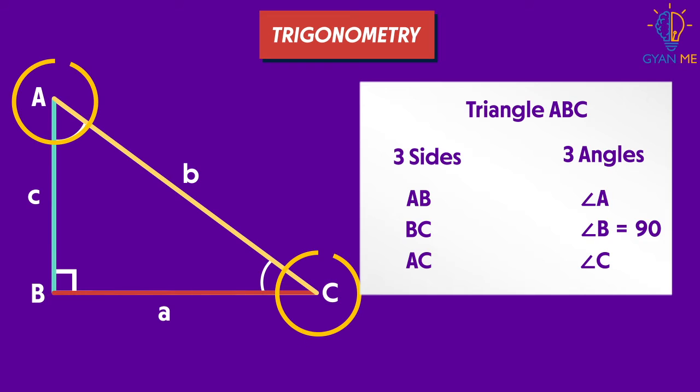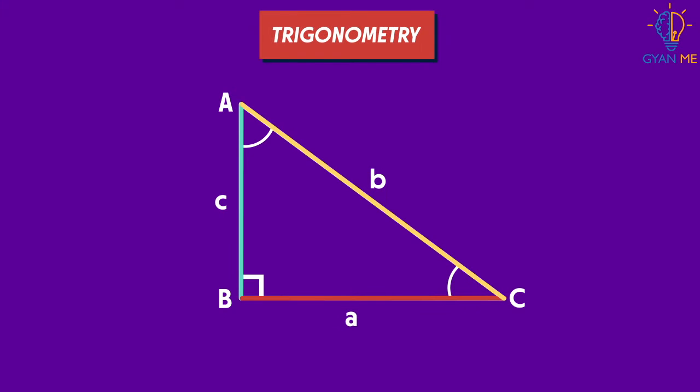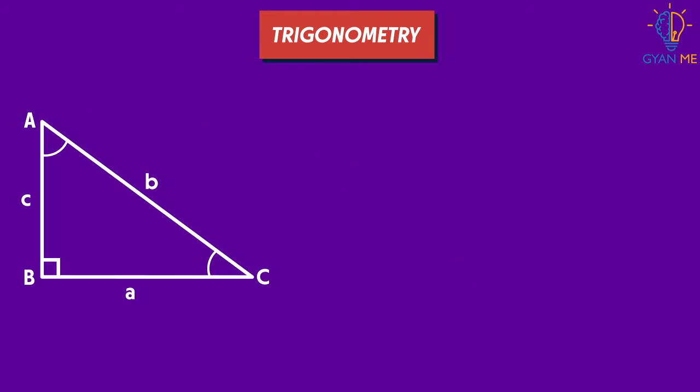So we have two angles and three sides. I already said that trigonometry deals with the ratios of the sides of right triangles. So let us take the ratios of these three sides. What can we write? Yes, we take a ratio of this a and b as a upon b. We can also take ratios of b and c as b by c and similarly a by c.